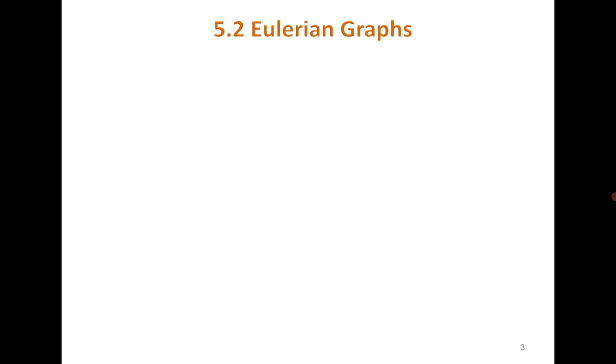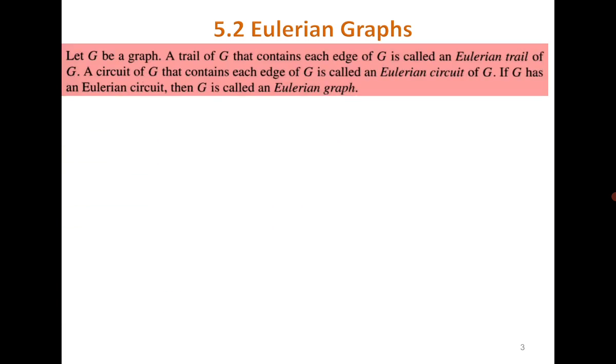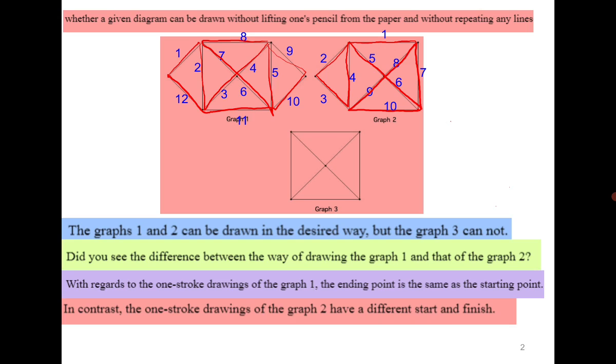Now we can define the Eulerian graphs. Let G be any graph. Recall the concept of walk—it's a sequence of vertices and edges—and then we discuss trail, which is a sequence of vertices and edges such that the edges should not get repeated. A trail of G that contains each edge of G is called an Eulerian trail, and closed trail is a circuit. A circuit of G that contains every edge of G is called an Eulerian circuit of G. If the graph has an Eulerian circuit we call it an Eulerian graph. You can see that in the previous slide the first one is an Eulerian graph because it has a closed trail covering all the edges.